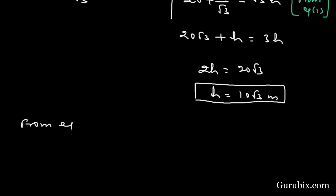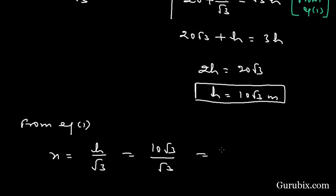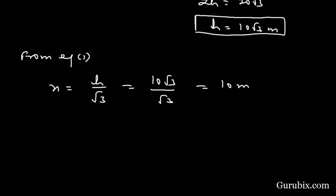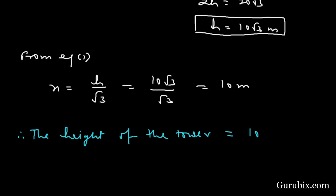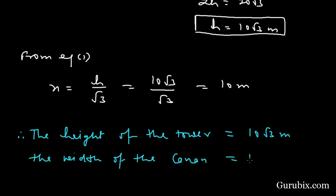From equation number one, x = h/√3 = 10√3/√3 = 10 meters. Therefore, the height of the tower is 10√3 meters and the width of the canal is 10 meters. This is the solution of the question. Thank you.